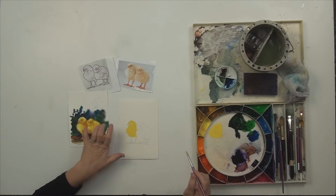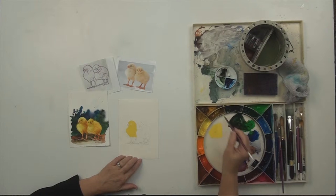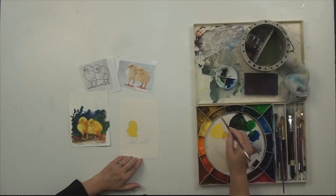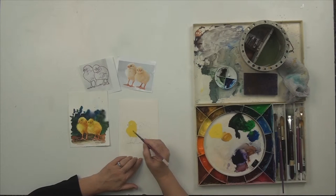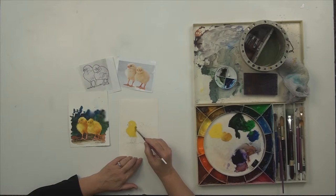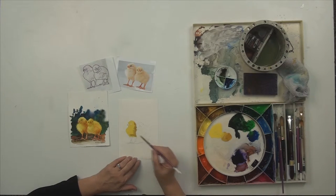While it's still wet, I added the darker color here. Here is a little Monti Amiata Natural Sienna. I'm going to put that along this side of the chick. I've got it a little wet, so it's making kind of a psychedelic pattern. That's kind of neat.